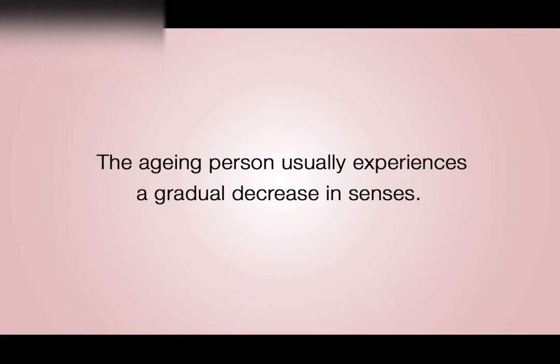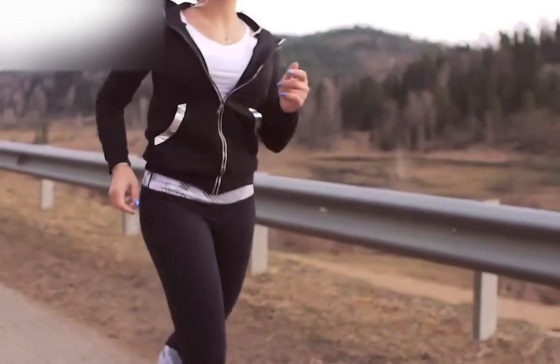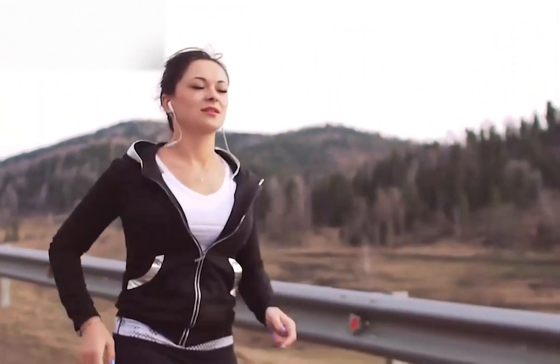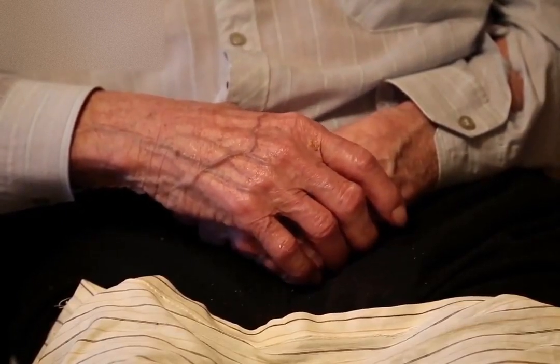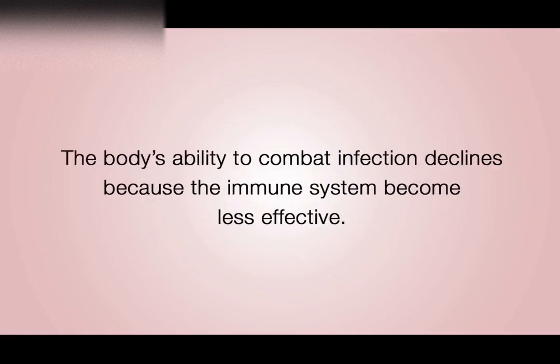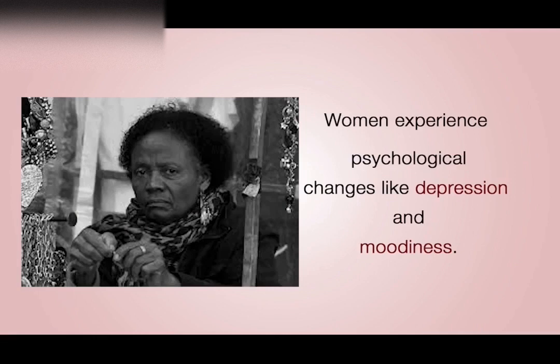The aging person usually experiences a gradual decrease in senses — their ability to taste and detect odor is reduced with age. Old people become arthritic and find it difficult engaging in vigorous activities. Others show some level of mental deterioration, that is senility, between the ages of 65 and 75 years. The body's ability to combat infections declines because the immune system becomes less effective. Women experience psychological changes like depression and moodiness. The men may experience nervousness, irritability, depression, and indecision.